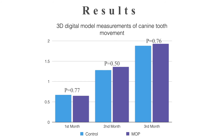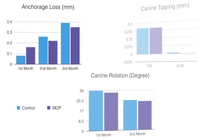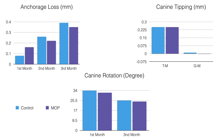Regarding the results: there was no statistically significant difference in the rate of tooth movement between the MOP and control sides at all time points. Anchorage loss, canine tipping, and canine rotation as secondary outcomes and confounders showed no statistically significant difference between the MOP and control sides.